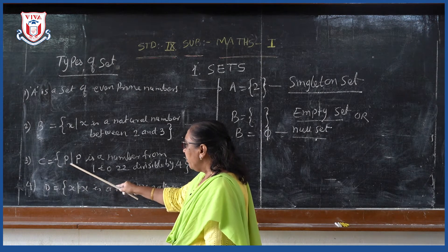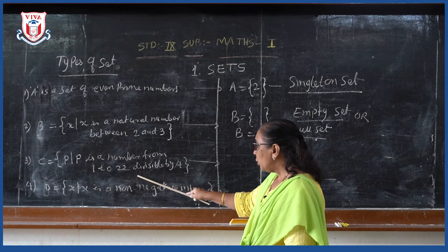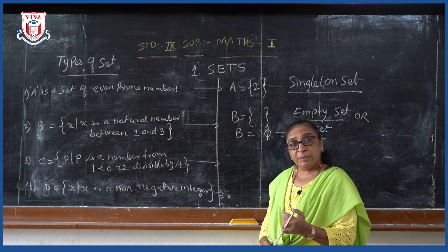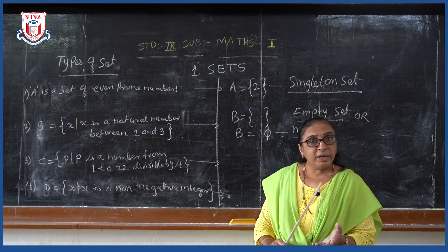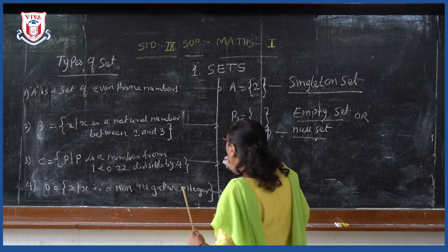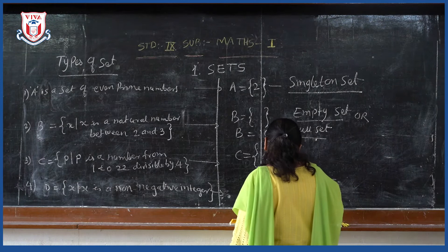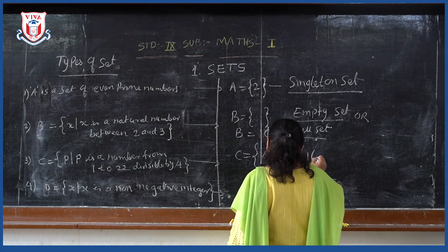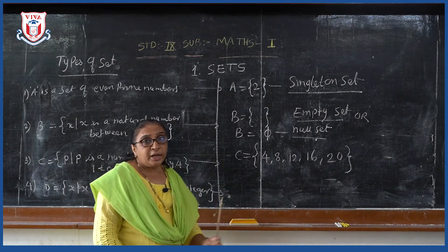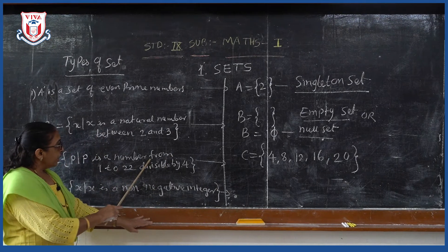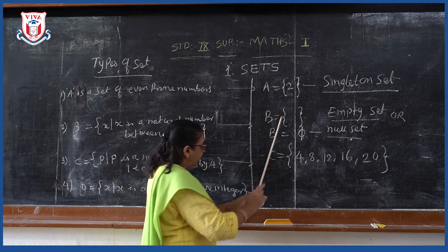See the third example. C is a set of all P such that P is a number from 1 to 20 divisible by 4. The numbers which come in the table of 4, or multiples of 4, will be divisible by 4. From 1 to 20, the numbers divisible by 4 are: 4, 8, 12, 16, and 20. More than 20 we cannot write because the condition states the number must be between 1 and 20.